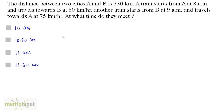The distance between two cities A and B is 330 kilometers. A train starts from A at 8 am and travels towards B at 60 kilometers per hour. Another train starts from B at 9 am and travels towards A at 75 kilometers per hour. At what time do they meet?